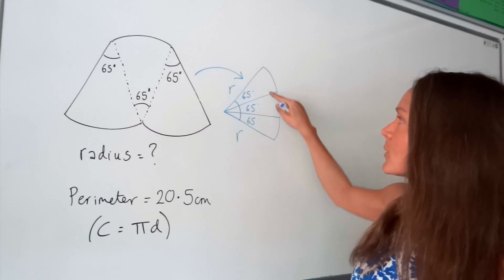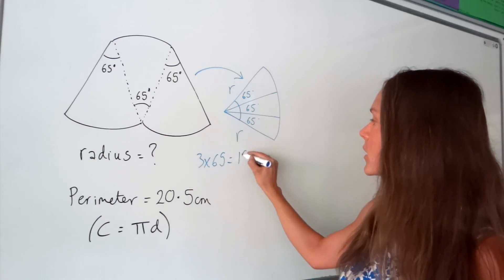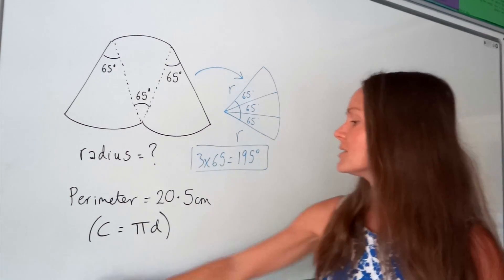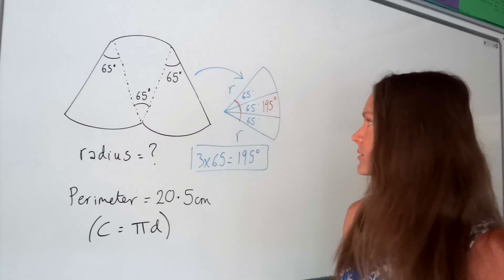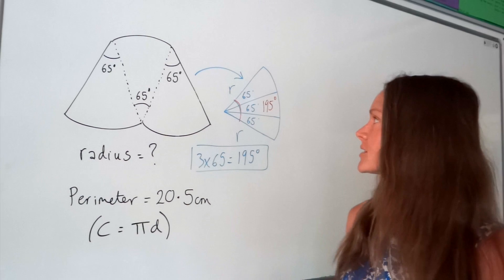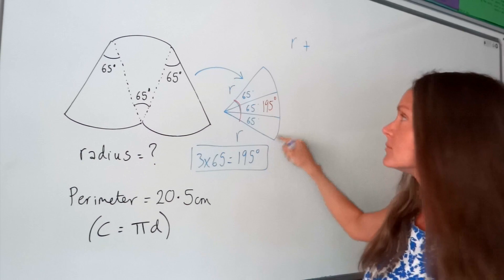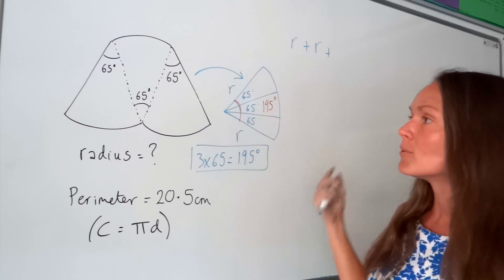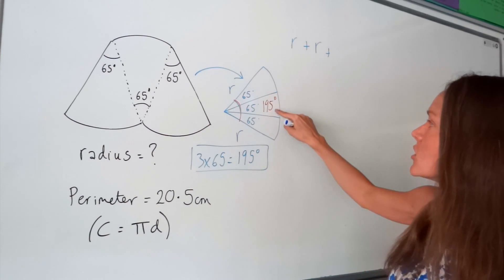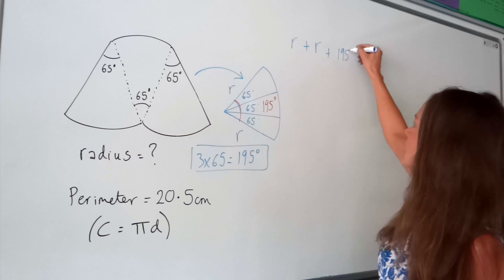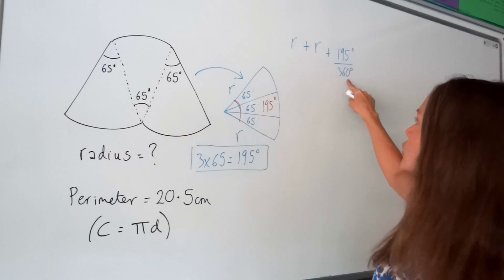There are three lots of 65 degrees, so 3 × 65 = 195 degrees total inside the sector. Now we can form an equation. The perimeter is the sum of all sides: this straight edge R, plus the other straight edge R, plus the curved arc. For the arc, we write the fraction of the circle as 195 degrees out of 360 — always out of 360 because one full circle has 360 degrees.